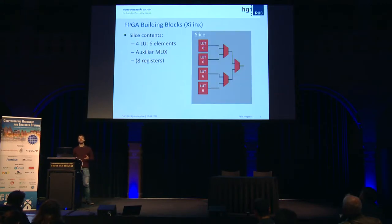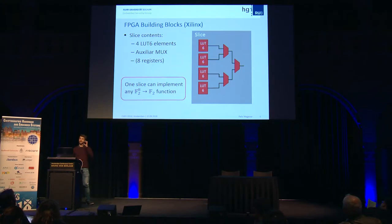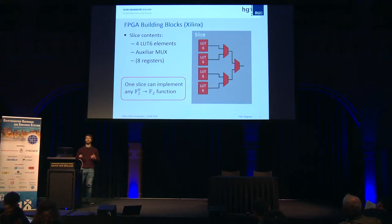Going to more complex blocks, an FPGA is further structured into slices. A slice contains four LUT6 elements and some additional multiplexers and registers. The crucial point is: you can think of one slice as a bigger lookup table that depends on eight bits. With only one slice, you can realize an arbitrary Boolean function that depends on eight input bits and has one output bit.